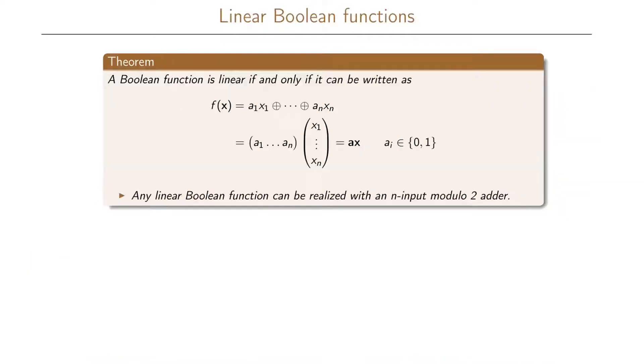We can generalize this with the following theorem. So a Boolean function is linear if and only if it can be written as f of x equals the sum of a_i times x_i, where i goes from 1 to n. Which can also be written as the multiplication of a row vector consisting of our a's and a column vector consisting of our x's, and we can write this in this form: A times x, where all the a_i is 0 or 1. And from this it also follows that any linear Boolean function can be realized with an n-input modulo 2 adder.